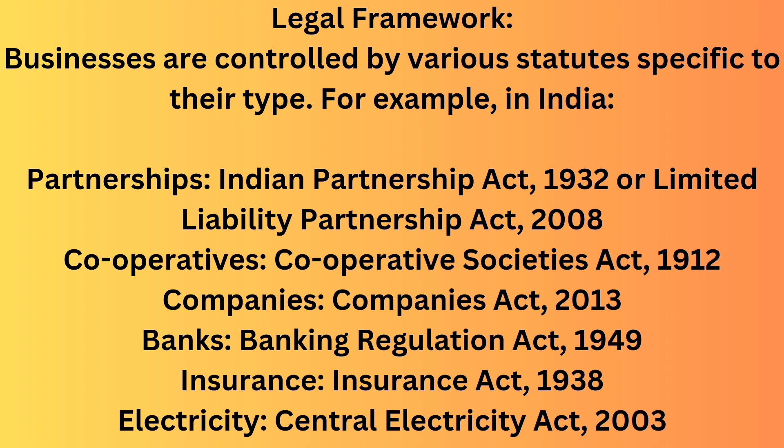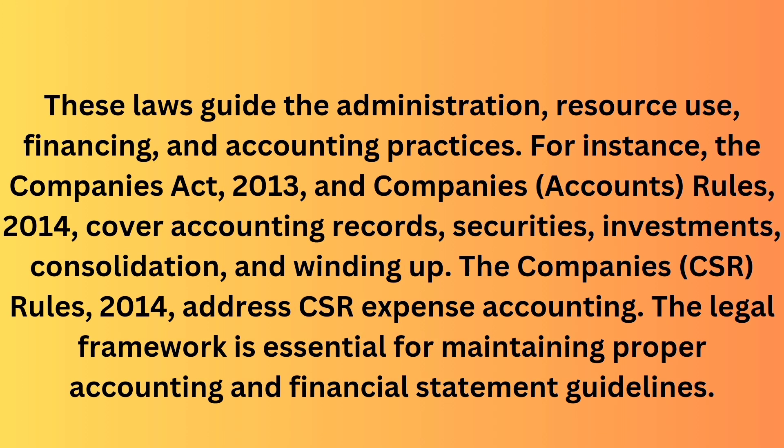There are special rule books for banks also — that is the Banking Regulation Act 1949. And for insurance companies, it is the Insurance Act 1938. For electricity companies, the Central Electricity Act 2003. These rule books make sure that these businesses work in a way that's safe for everyone involved and follow strict guidelines, because they deal with important services like money, safety and energy. These statutes not only tell businesses how to set up and run their operations, but also give instructions on how to use money wisely, how to finance their activities, and how to keep track of all their transactions in books of accounts. For example, the Companies Act 2013, along with the Companies Rules 2014, gives companies directions on how to maintain their accounting records properly.